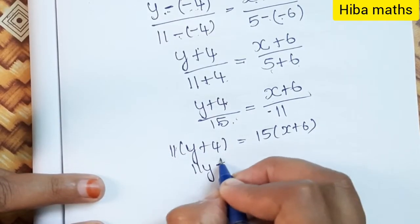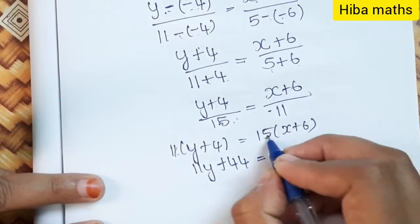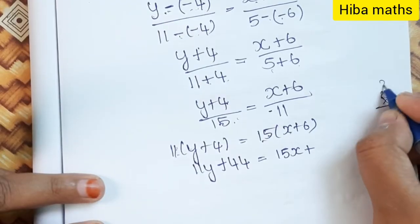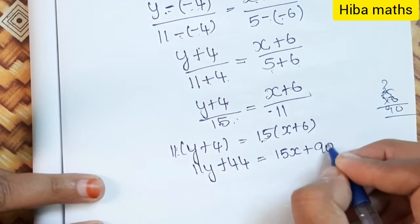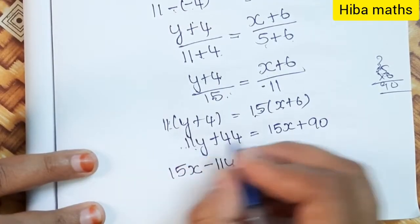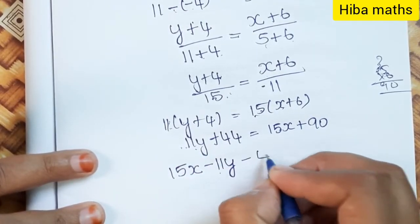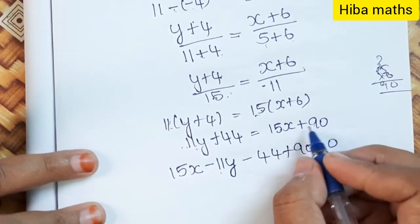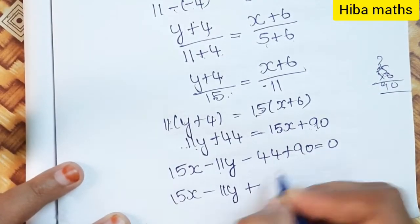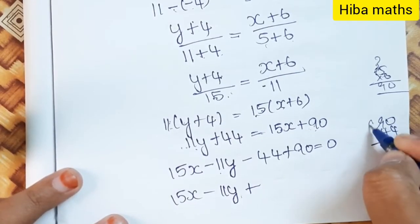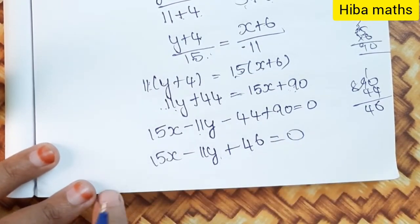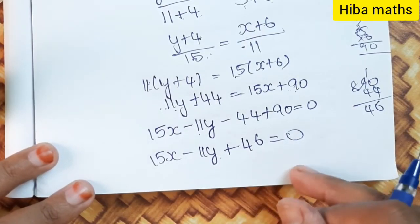Expanding: 11y plus 44 equals 15x plus 90. Rearranging to one side: 15x minus 11y plus 90 minus 44 equals 0. So 90 minus 44 is 46. Therefore, 15x minus 11y plus 46 equals 0. This is the equation of the path.